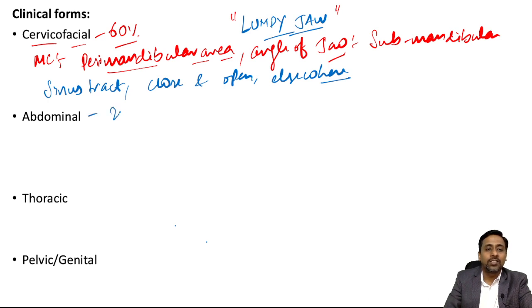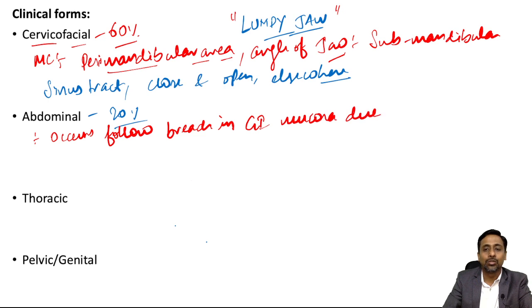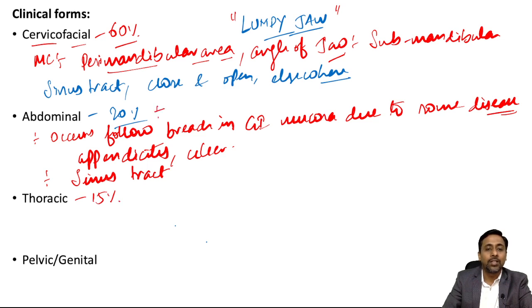Abdominal actinomycosis is seen in about 20% of cases and usually occurs following a breach in the GI mucosa due to disease or any event — such as a ruptured appendix from appendicitis or peptic ulcer disease. Sinus tracts or discharging fistulae may also be found. The commonest site involved in abdominal actinomycosis is the ileocecal area.